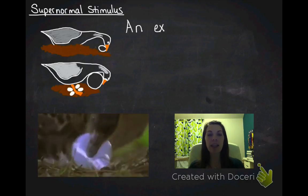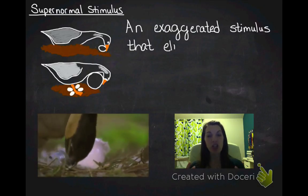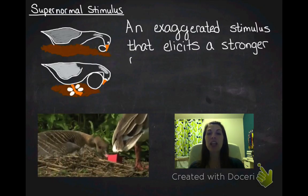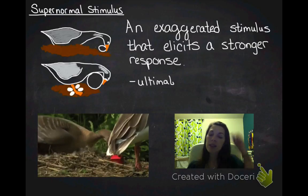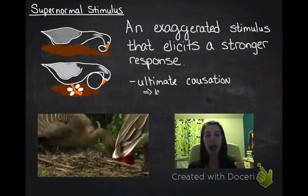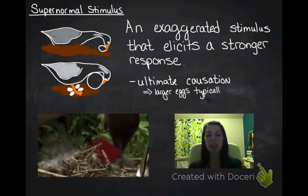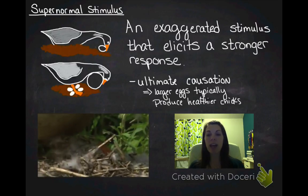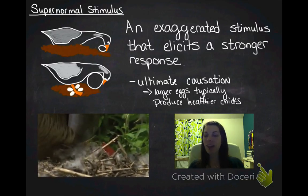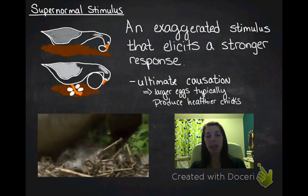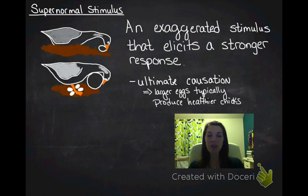So, what's happening is you have an exaggerated stimulus, a giant egg, that elicits a stronger response. So, it's going to go ahead and it's going to respond to that giant egg rather than its own egg. And we have to talk about evolutionarily what's happening there because that doesn't really make any sense, right? Like why would you roll a fake egg or a pool ball or a block or a Russian nesting doll back to your nest over your own egg?